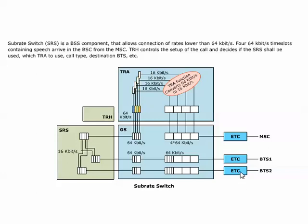The GS sets up connections to the TRA, which transcodes the four 64 kilobits per second channels to four 16 kilobits per second. The four multiplied by 16 kilobits per second channels are then multiplexed to one 64 kilobits per second channel, which is returned to the GS. The SRS switches the 16 kilobits per second sub-rate channels to two kilobits per second channels, which are returned to the GS.